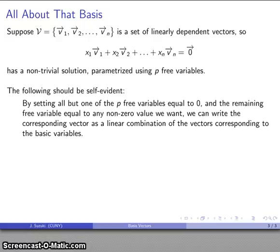If, as we just did, set all but one of the free variables to zero, and let the remaining free variable be equal to actually any non-zero value that we want, we can write the corresponding vector as a linear combination of the vectors corresponding to the basic variables. So, anything that used any of the other free variables is gone, and the only thing that's left over are vectors that can be expressed using our one free variable that we said equal to our non-zero value.